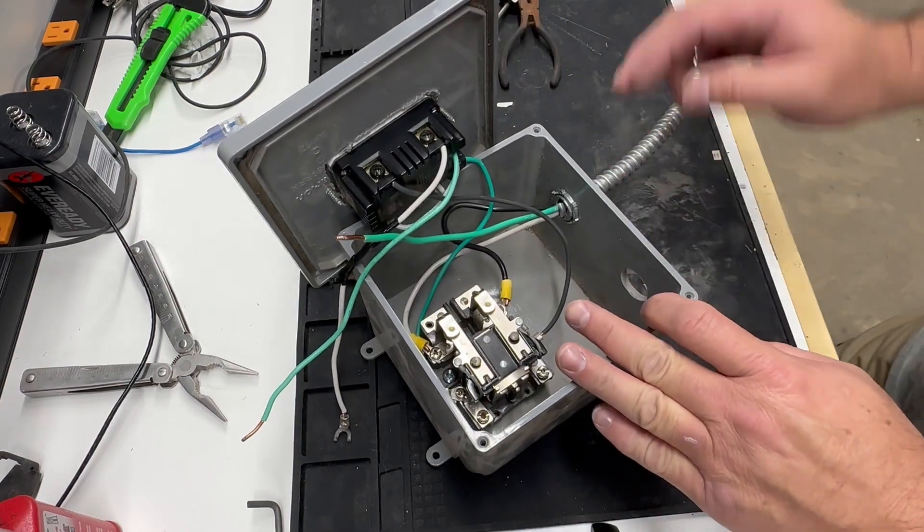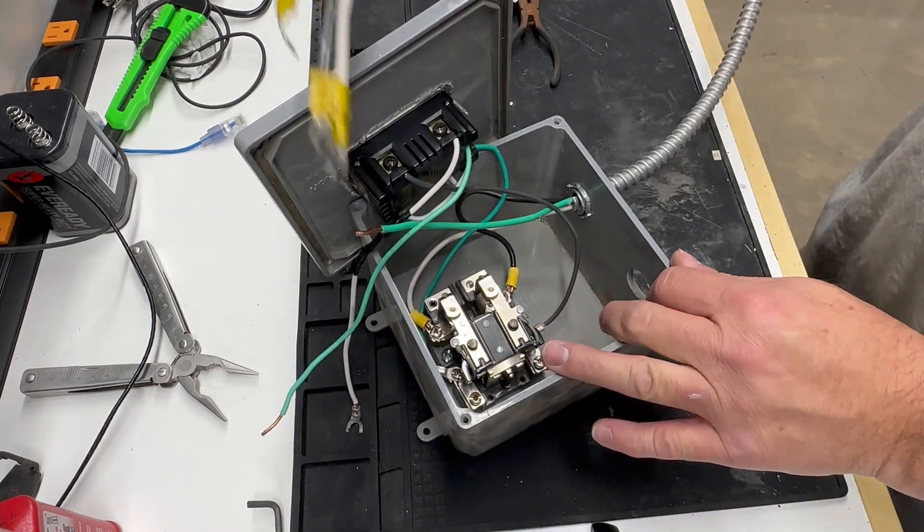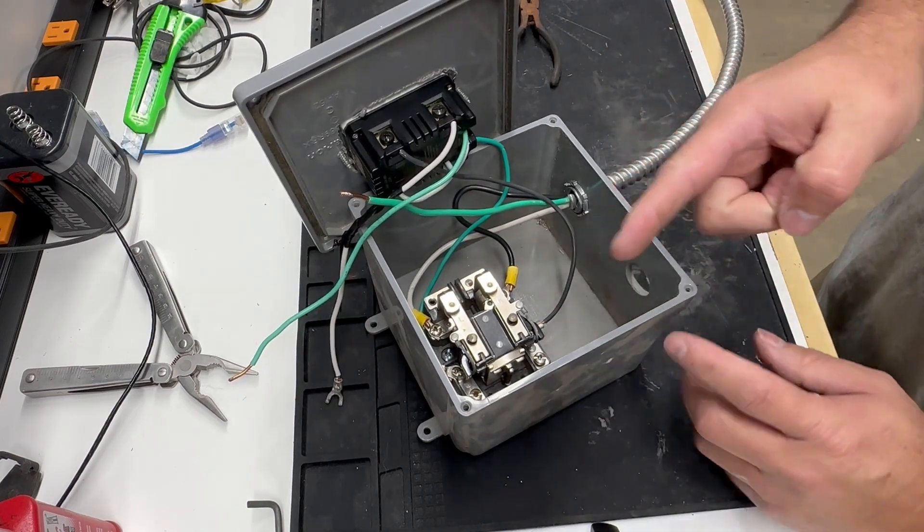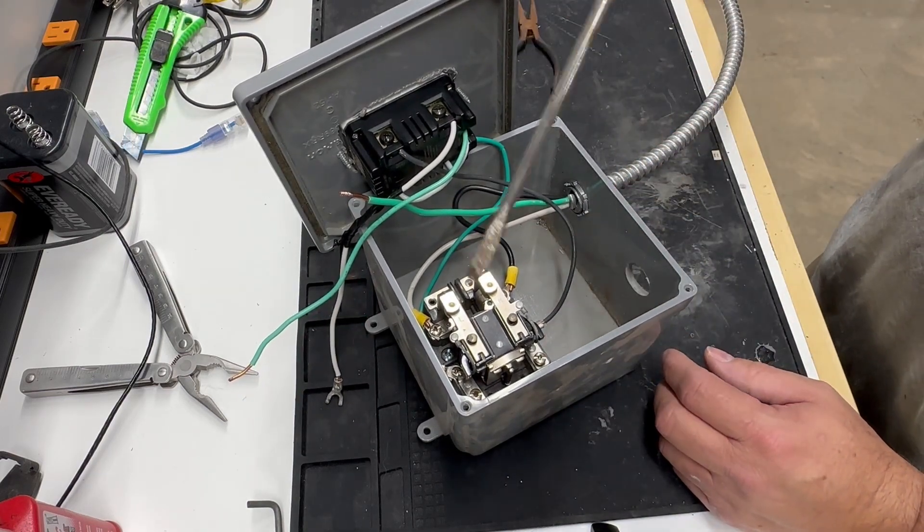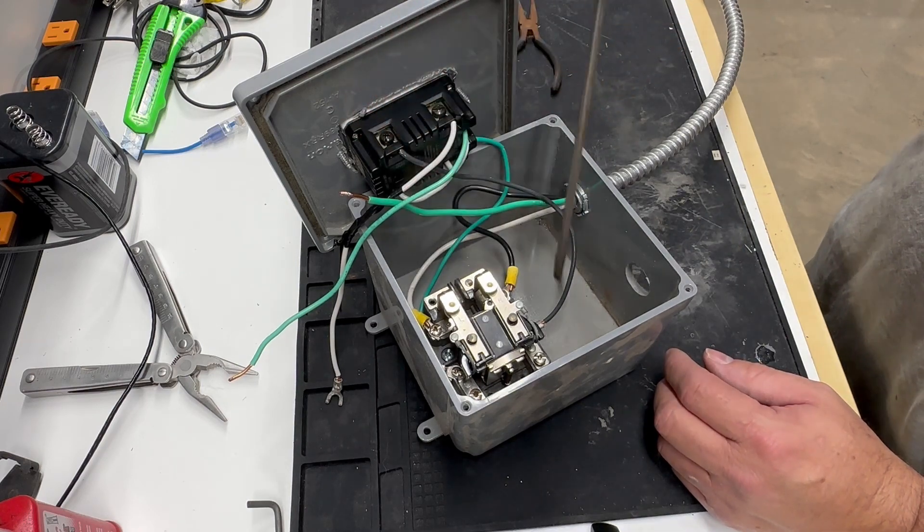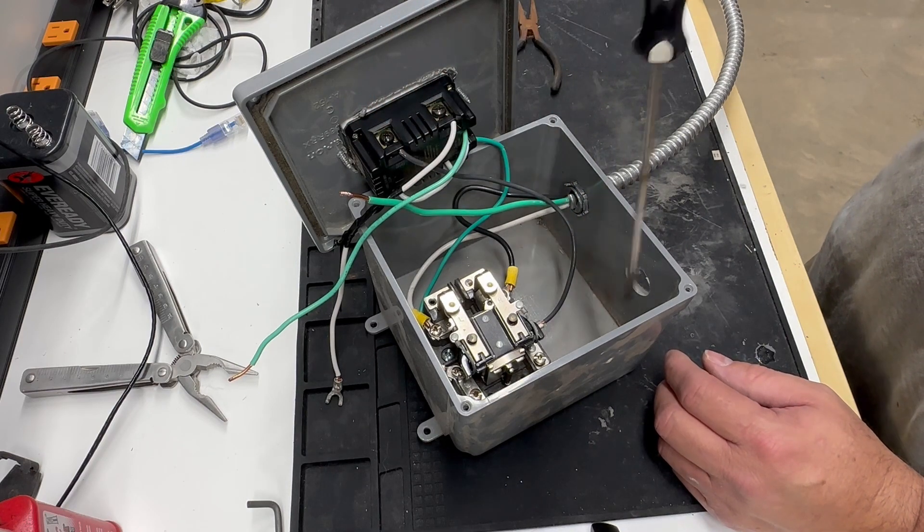Basically this is a 6 by 6 box. I took and cut it out with a Dremel tool and made it to where this timer switch would work in there, and then drilled two holes. This right here will end up going to the air compressor and then the wire that comes from the breaker will go into this hole here.